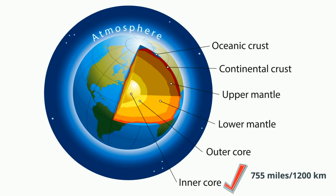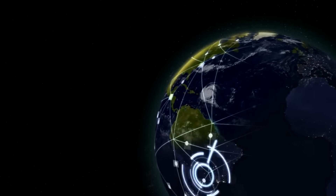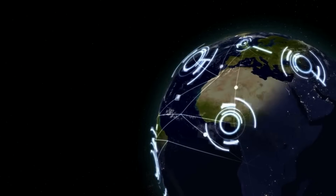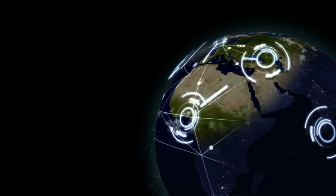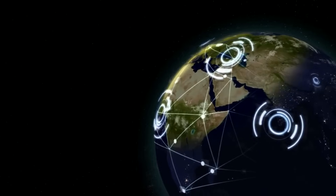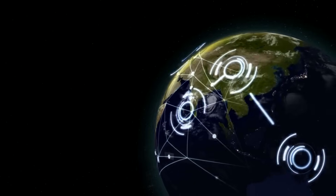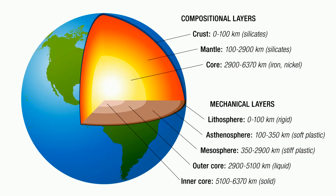The Earth can also be divided into layers based on physical properties, such as whether the layer is solid or liquid. The five physical layers are the lithosphere, asthenosphere, mesosphere, outer core, and inner core.